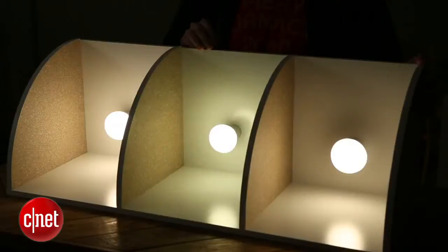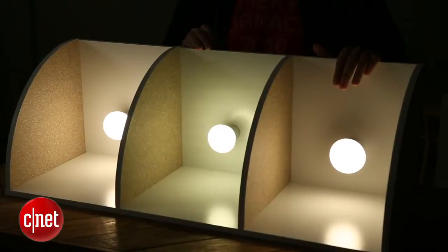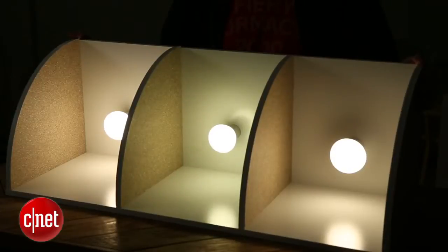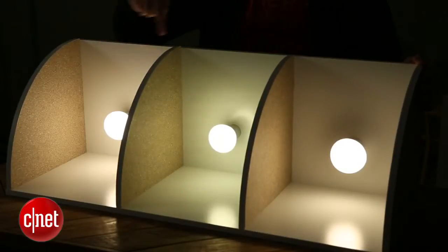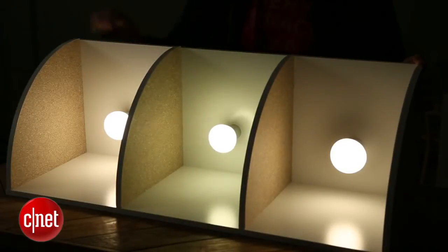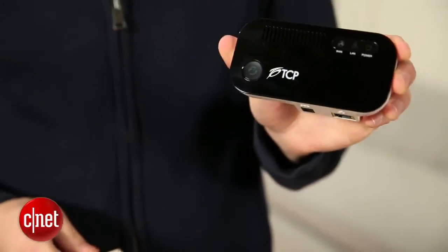And then over here on the right we've got the Insteon LED bulb and that's 591 lumens. It's the dimmest of the three but it's still a very good bulb. The three of them are very comparable and they're comparable in price. So if you're looking at your smart home lighting options consider all three of them.